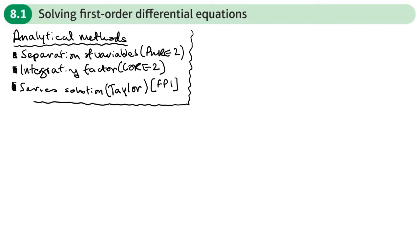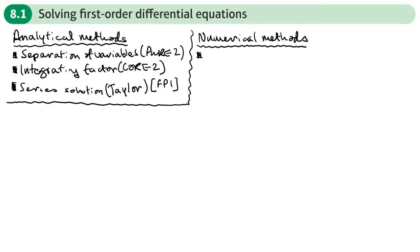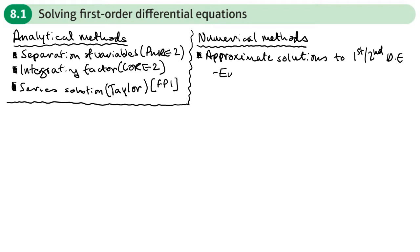What if you can't use an analytical method — what if you cannot use an algebraic method to solve a differential equation, whether that's a first-order or second-order differential equation? Well, this is where we'd use a numerical method. Numerical methods give us approximate solutions to first- or second-order differential equations, and the one we're going to look at is called Euler's method.